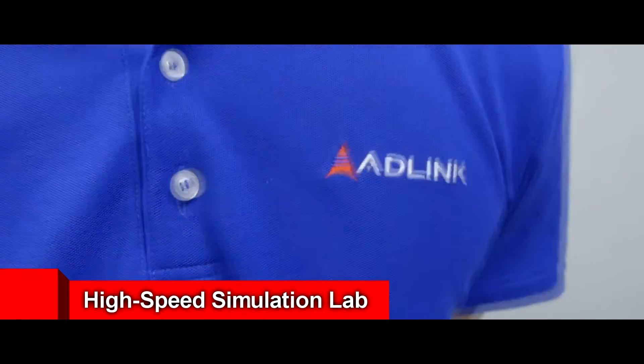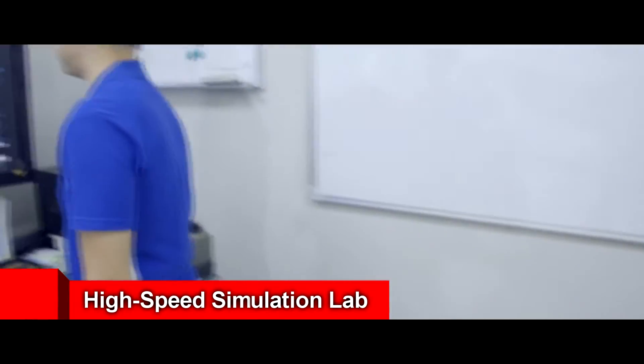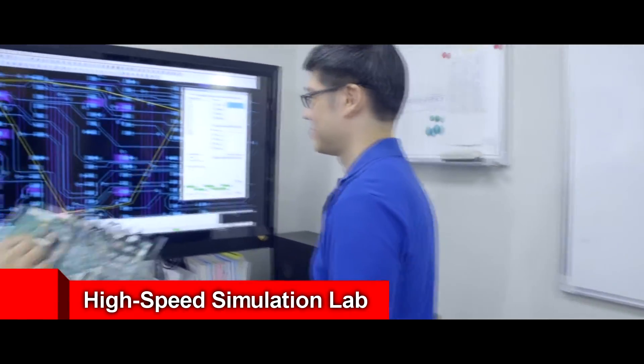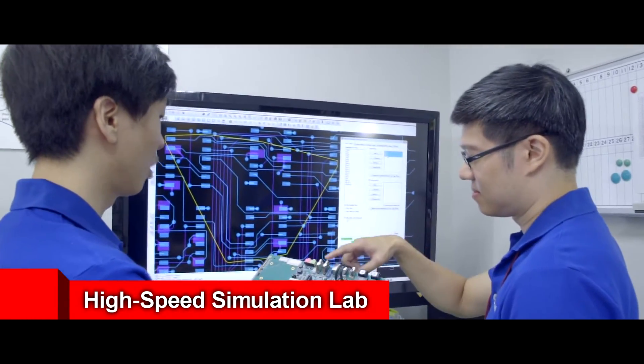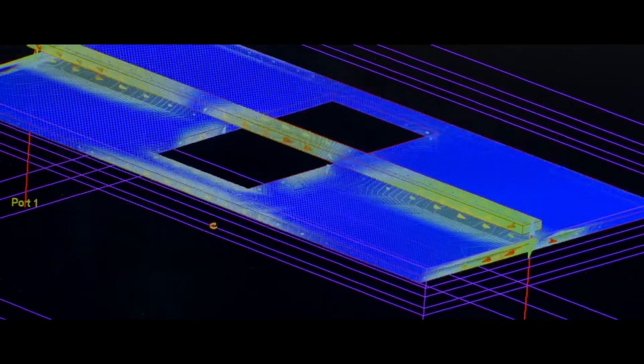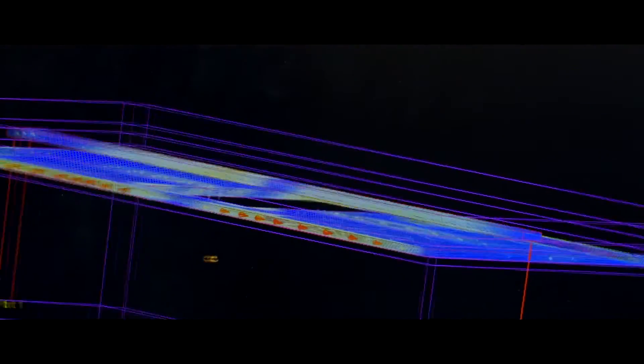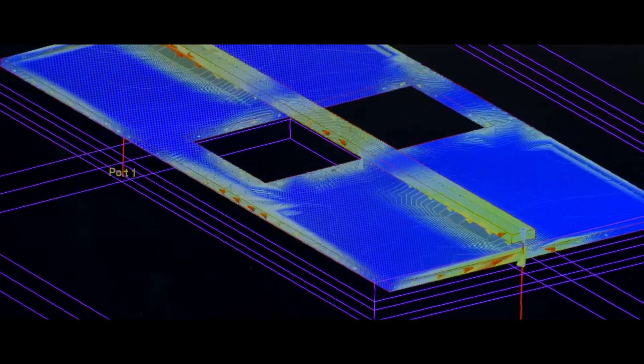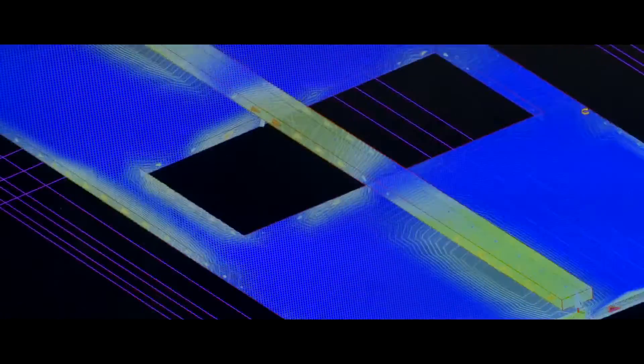First is the high-speed simulation lab, featuring everything necessary to perform pre and post layout electromagnetics and circuit simulation testing. Virtual prototyping provides highly accurate predictive pass and fail reports for high-speed signals and more.